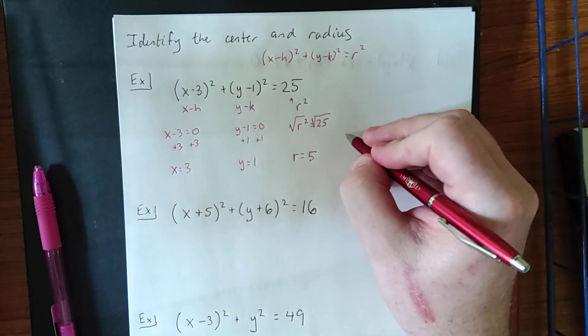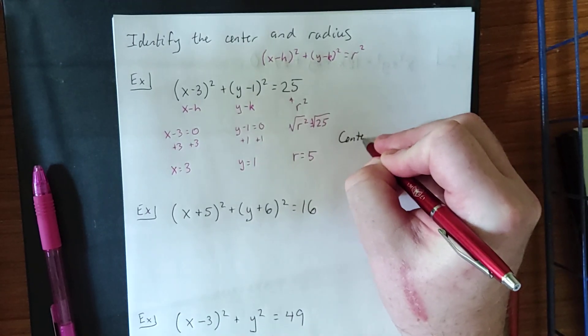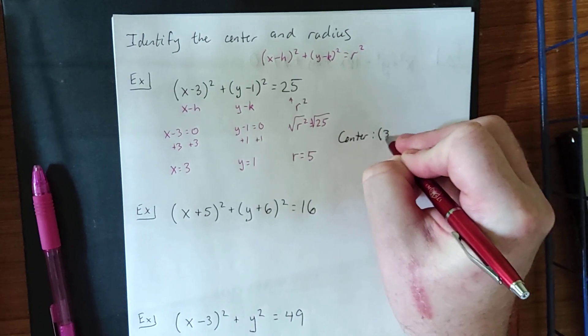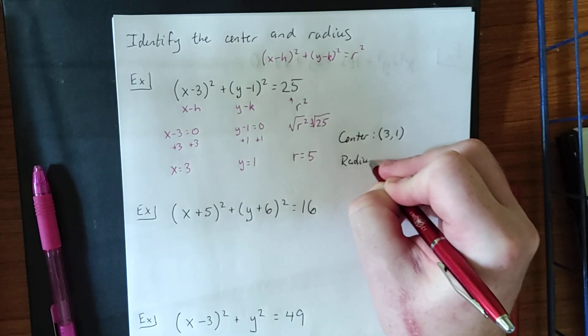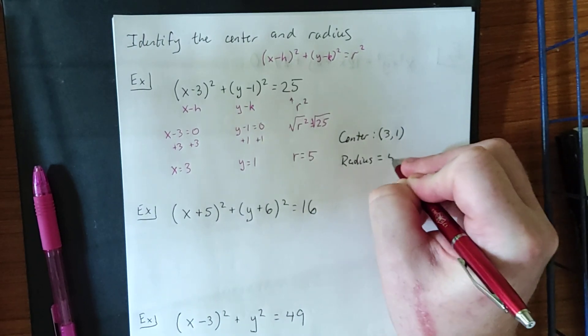So, interpreting all of this, the center is going to be located at the ordered pair 3, 1, and the radius is equal to 5.